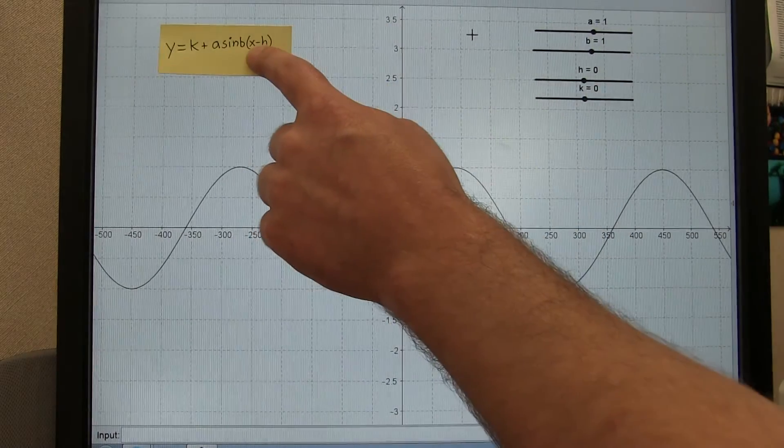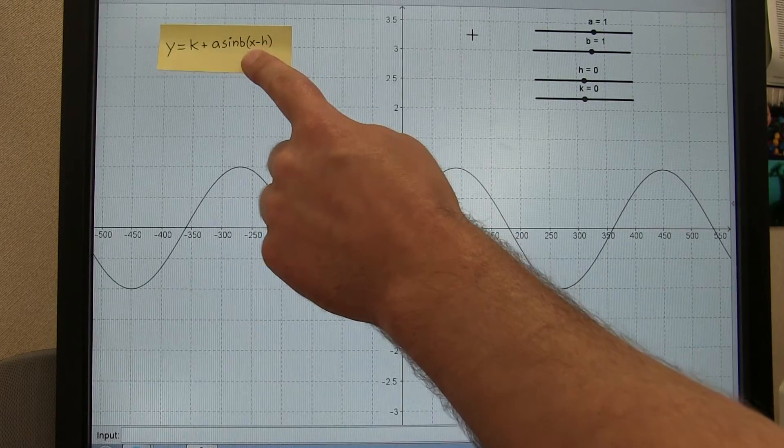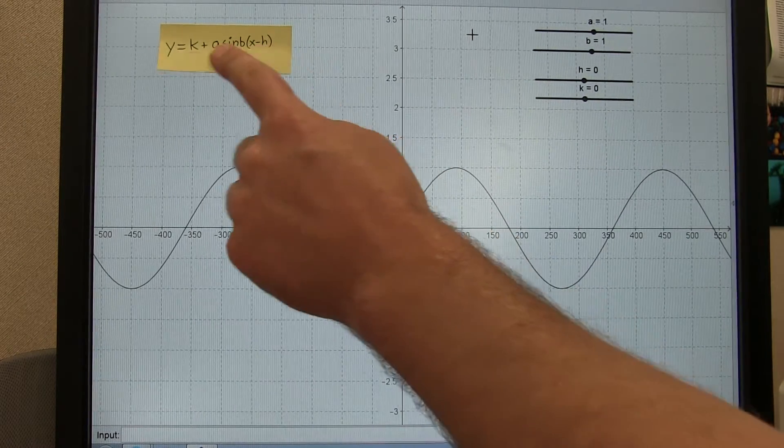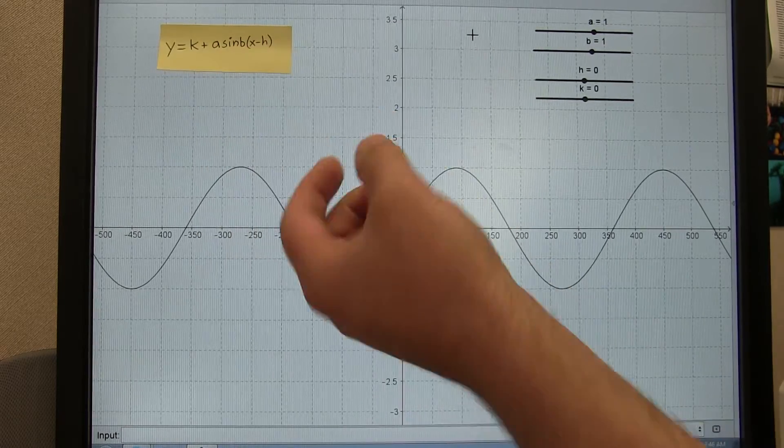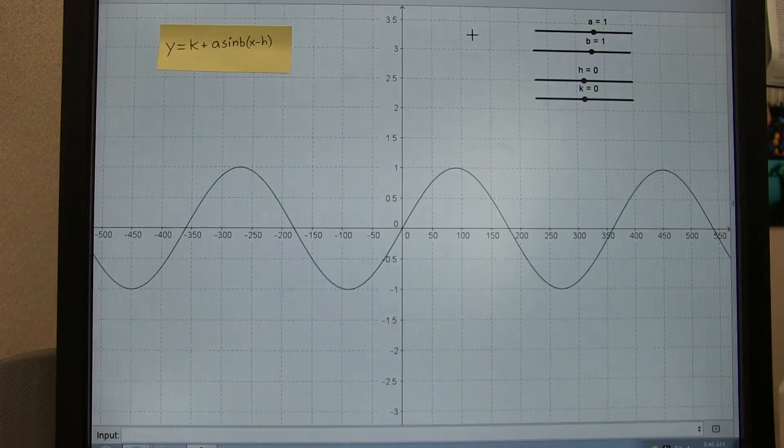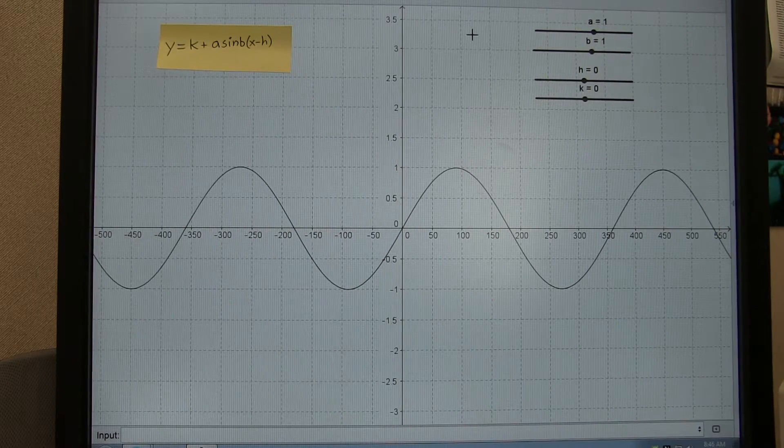Now remember, x stands for how many degrees. For instance, we could plug in 90 degrees into this function, and depending on what k, a, b, and h are, it would evaluate some y, and we'd end up with some sort of graph.